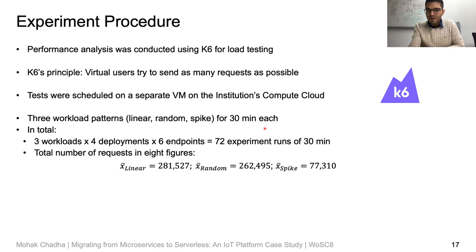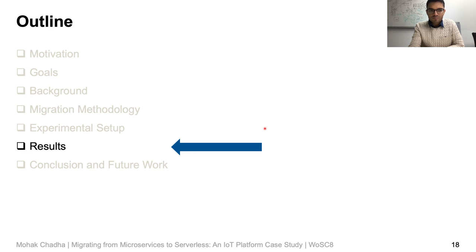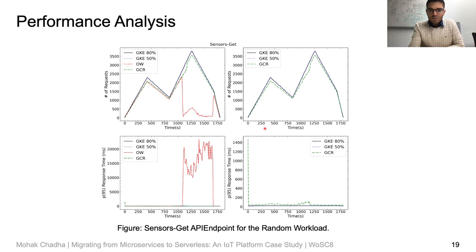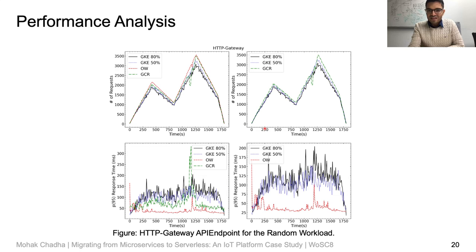The top two figures show the number of requests, while the bottom two show the P95 response time for different deployment strategies. For most API endpoints, we observed that GKE deployment strategies performed best, followed by GCR and then OpenWhisk. We had a significant increase in P95 response time for OpenWhisk for greater than 2000 requests per second. Moreover, the initial response times for GCR were significantly high as well due to cold starts. In contrast, for the HTTP gateway, the serverless deployments performed better than GKE, with OpenWhisk performing significantly better. The main reason was the high initial resource provisioning for OpenWhisk in our experiment configuration, and unlike GCR, OpenWhisk enforces no CPU resource limit, leading to better performance.